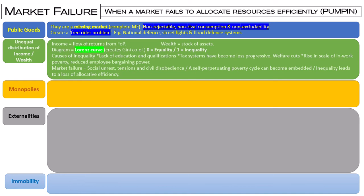Moving on to monopolies. See if you can define what is meant by a pure, working, and dominant monopoly. So a monopoly is a single seller with 100% of the market share. A working monopoly is 25% of the market — those are the ones the CMA are particularly interested in — as well as dominant monopolies which own 40% of the market share.